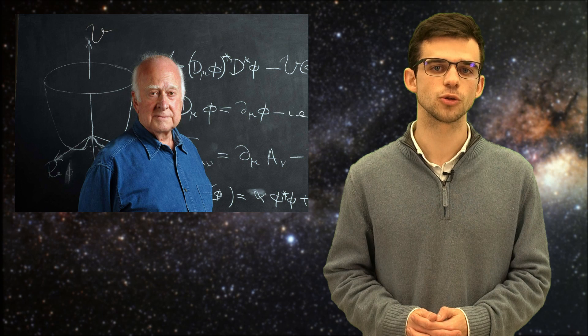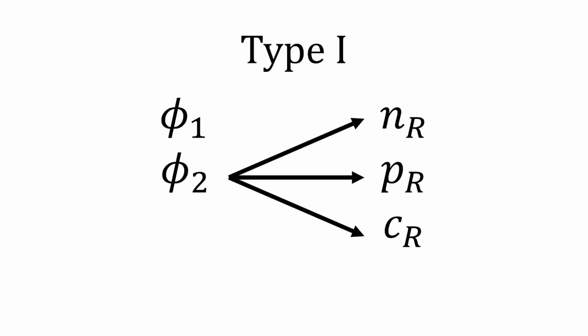However, with two Higgs families, there are four ways of coupling the Higgs to the massive matter particles. There are four types of Yukawa couplings: the type 1, the type 2, the type X and the type Y.